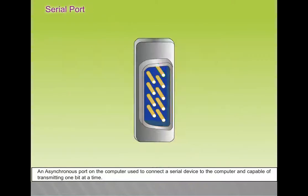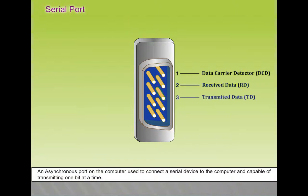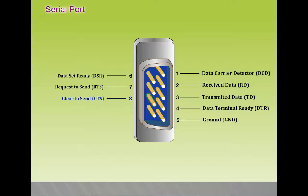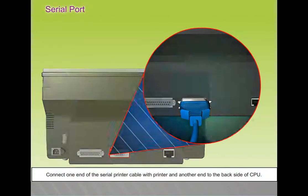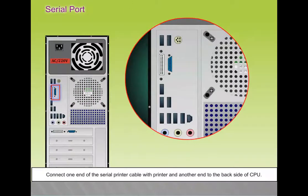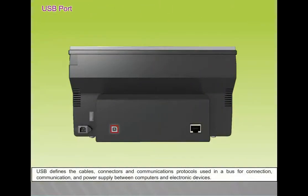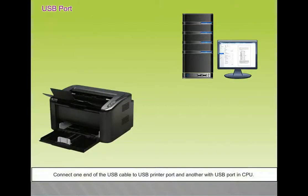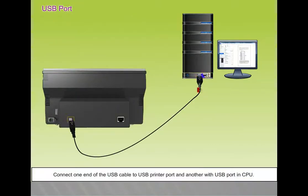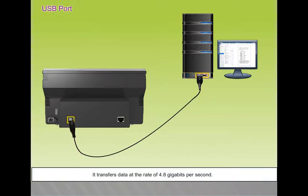Serial port: an asynchronous port on the computer used to connect a serial device, capable of transmitting one bit at a time. Connect one end of the serial printer cable to the printer and the other end to the back of the CPU. USB port: USB defines the cables, connectors, and communication protocols used in a bus for connection, communication, and power supply between computers and electronic devices. Connect one end of the USB cable to the USB printer port and the other to the USB port in the CPU. It transfers data at a rate of 4.8 gigabits per second.